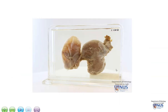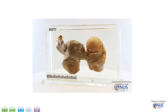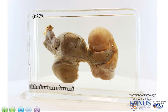Coming back to this specimen, we can see a very markedly dilated fallopian tube on the right side, and even though we don't see the cut surface it is apparent that the tube is filled with clear fluid. This is an example of hydrosalpinx. It is likely that there is obstruction at the fimbrial end, which causes proximal dilatation and distension of the tube, and hence this obstruction can lead to infertility.